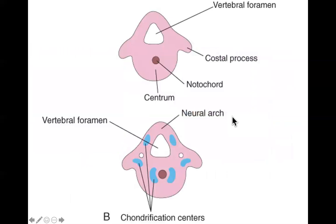Once we've got this mesenchymal model formed, we start the process of chondrification — we have to turn this mesenchyme into cartilage, because the spine forms entirely through endochondral bone formation. You start with these primary chondrification centers, shown here in blue. This begins during the sixth week — chondrocytes appear at the chondrification centers and from there spread far and wide, replacing all the mesenchyme tissue with cartilage. Toward the end of the embryonic period, all the different centers fuse together into one big massive cartilaginous model of the bone.